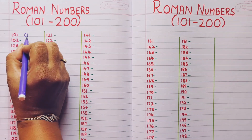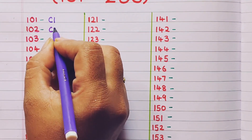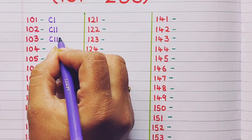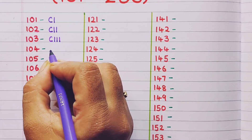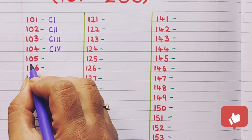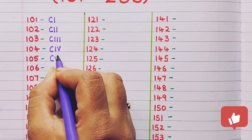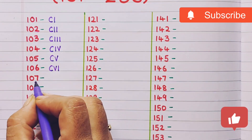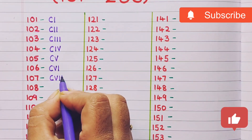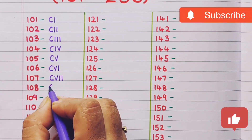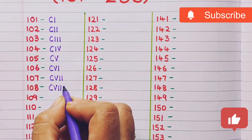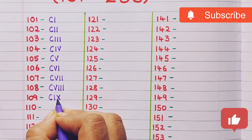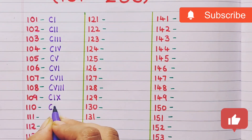101 is CI. 102 is CII. 103 is CIII. 104 is CIV. 105 is CV. 106 is CVI. 107 is CVII. 108 is CVIII. 109 is CIX. 110 is CX.